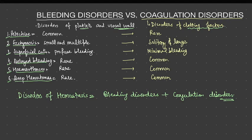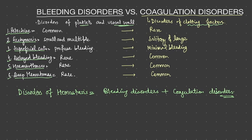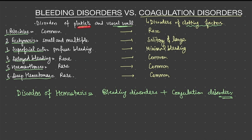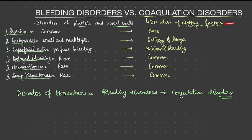In this video, we will be discussing the difference between bleeding disorders and coagulation disorders. The disorders of platelets and vessel wall come under the category of bleeding disorders, while the disorders of clotting factors — whether there is deficiency, congenital deficiency, defect, decreased production, or increased loss — all these come under the category of coagulation disorders. Both bleeding and coagulation disorders come under the bigger entity of disorders of hemostasis.